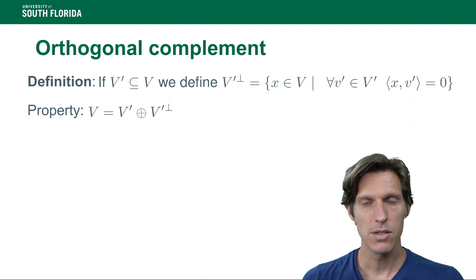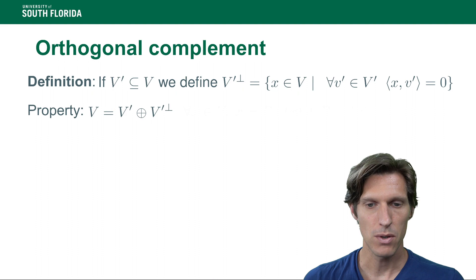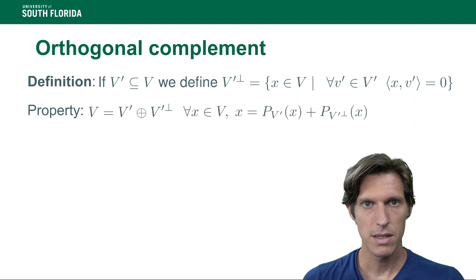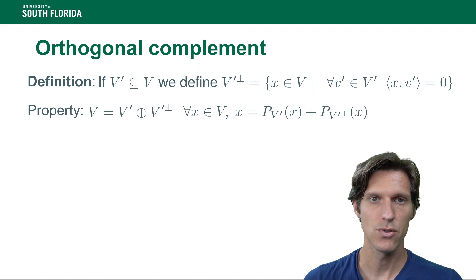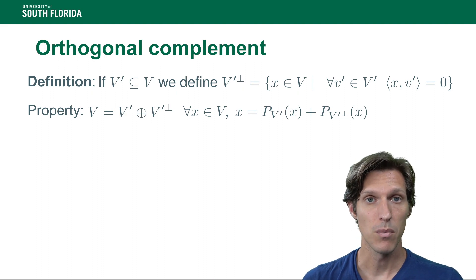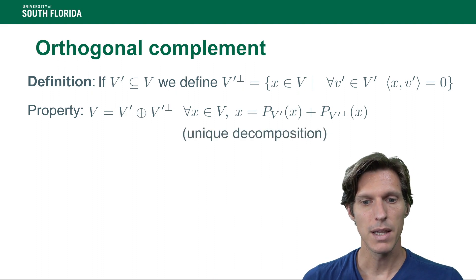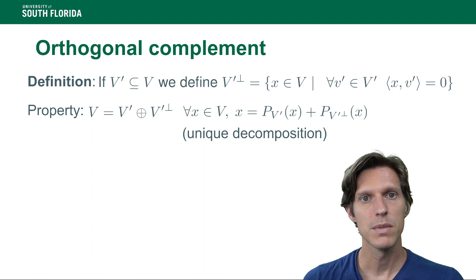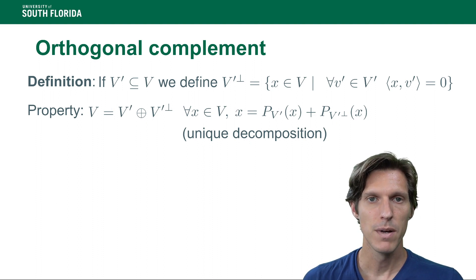Now it has the property that V is the direct sum of V' and its orthogonal complement. What it means is that each x in V can be written as the projection of x onto V' plus the projection of x onto the orthogonal complement of V', and that decomposition is unique.